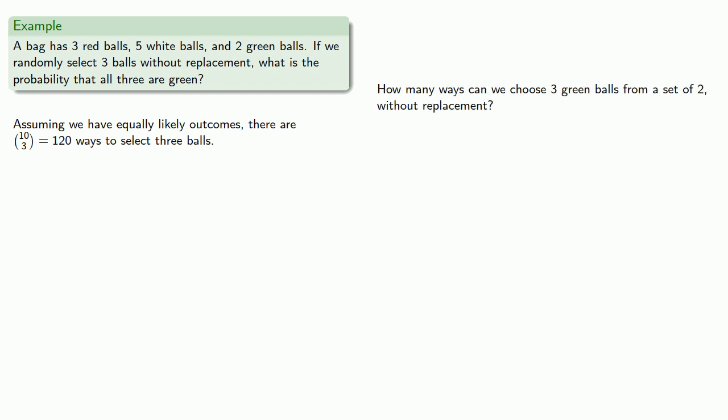And so maybe we can set this up. Our permutations are, for the first ball, we have 2 choices. For the second, we have 1 choice. And for that third ball, there are 0 choices left. There are no green balls left to choose from. And so there are 0 ways we could make this selection.